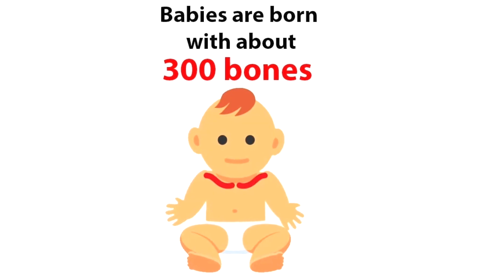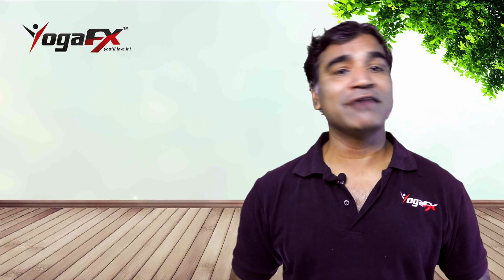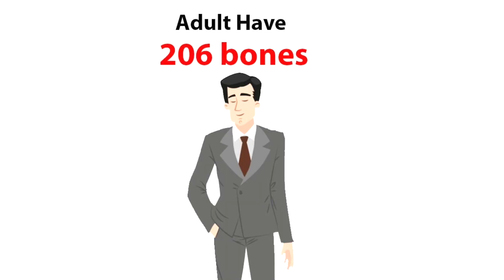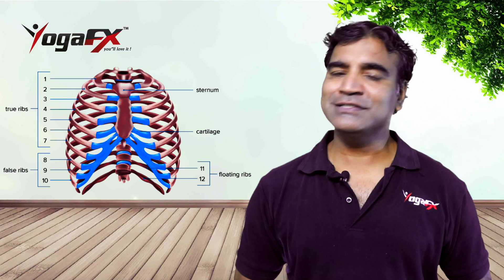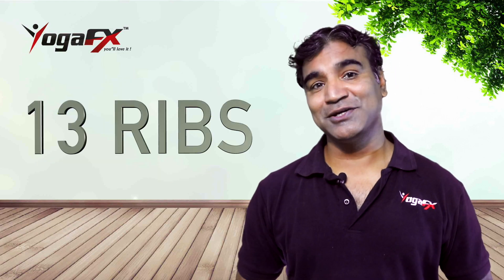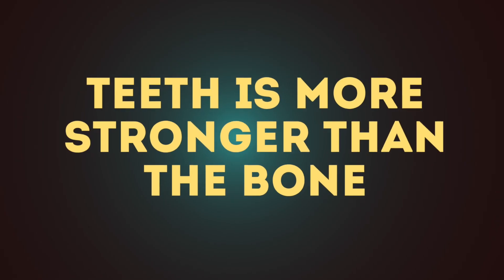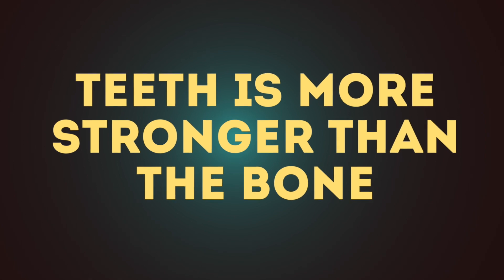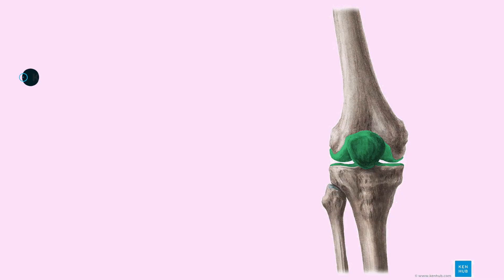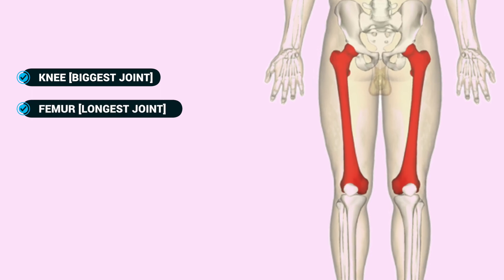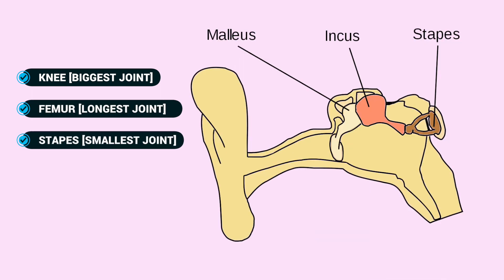Did you know that babies are born with 300 bones, but as adults we have only 206? There is a bone not connected to any joint — that's the hyoid bone. While we've heard that we have 12 ribs, some people have 13. And did you know that teeth are stronger than bone?